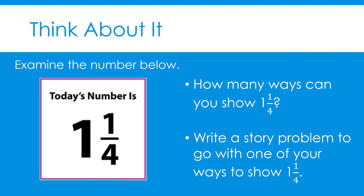You could have written many story problems to go with one of your ways to show one and one-fourth. For example, if you represented one and one-fourth as an area model, your story problem could have been: Joe ate one sandwich. He then ate one-fourth of another same-sized sandwich. How many sandwiches did Joe eat altogether? In this story problem, one and one-fourth sandwiches is the answer.